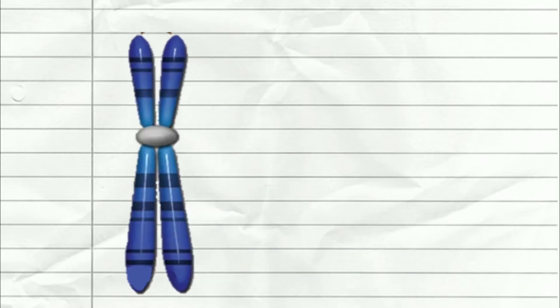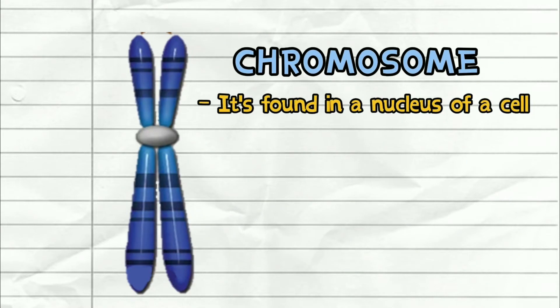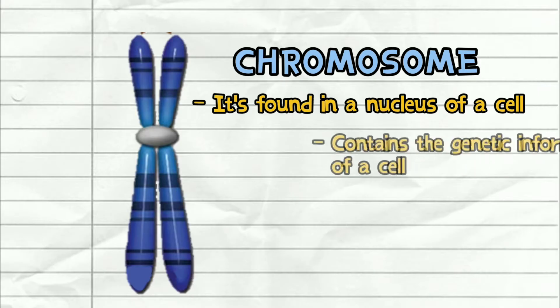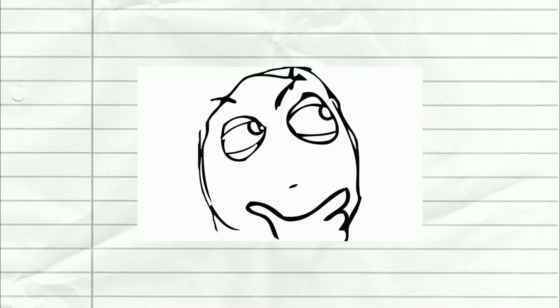I'm sure most of you have seen this structure before. It's called a chromosome, which is found in the nucleus of a cell, and it carries the genetic information of a cell. So let me ask you three real simple questions.